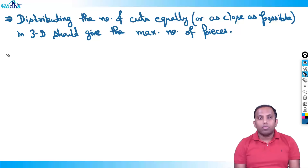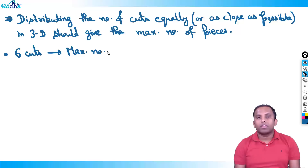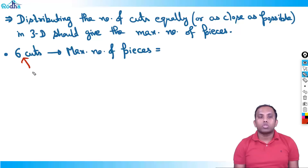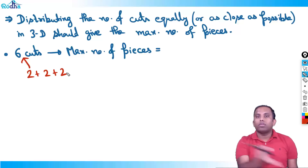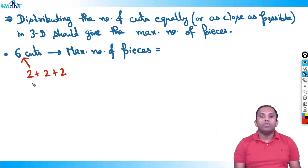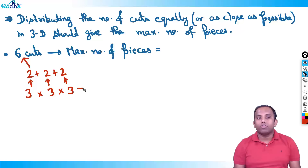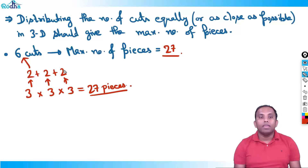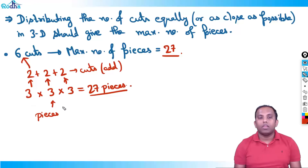For example: 6 cuts in a cube — what is the maximum number of pieces? Distribute equally: 6 ÷ 3 = 2, so two cuts in each direction (2+2+2). Two cuts give three pieces per dimension. So 3 × 3 × 3 = 27 pieces. Looking at the diagram: nine pieces per layer × three layers = 27. Maximum number of pieces is 27.